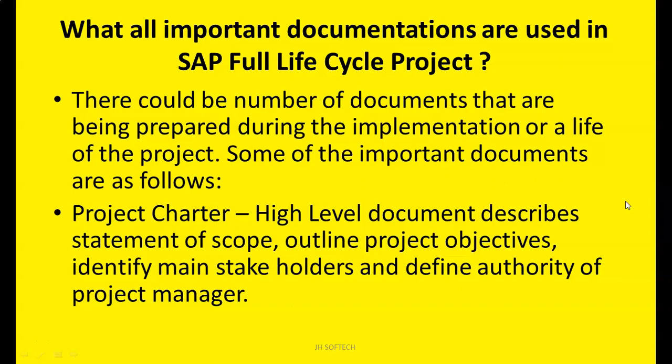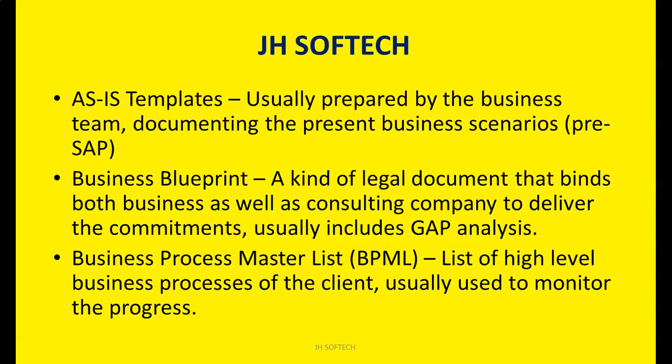The first important document is the Project Charter. It is a high-level document that describes the statement of scope, outlines project objectives, identifies main stakeholders, and defines the authority of the project manager. In different projects, the project manager may be called a captain, delivery manager, or other titles — all of this is described in the Project Charter.